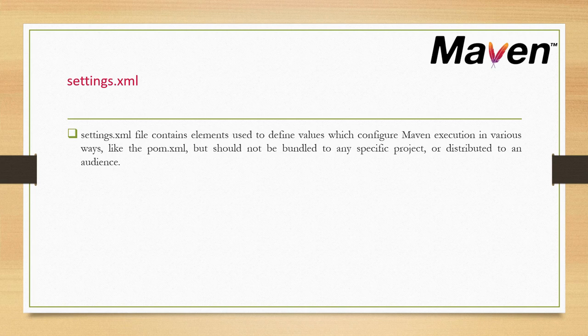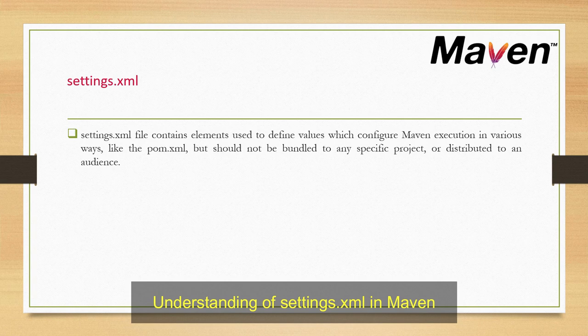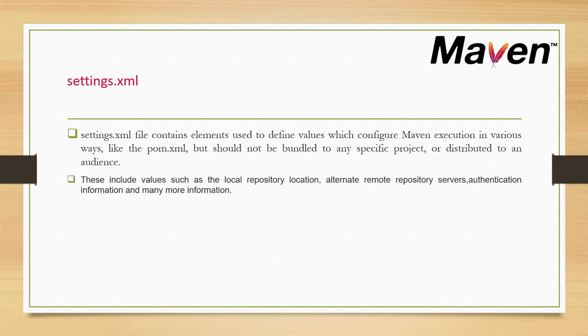When we talk about settings.xml, this file contains elements used to define values which configure Maven execution in various ways — like the pom.xml — but it should not be bundled to any specific project or distributed to an audience. Whatever settings we do in settings.xml, that should not be bundled with the project and should not be available for distribution to all audiences.